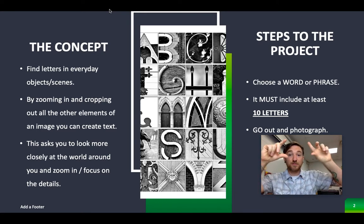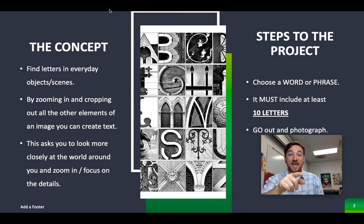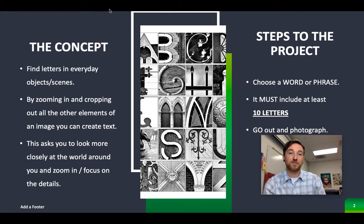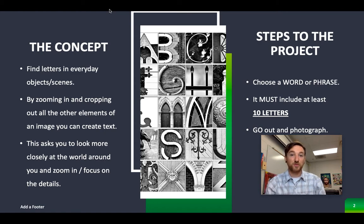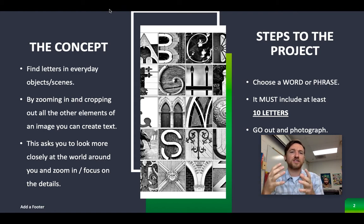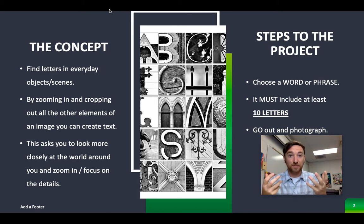It might involve turning something — you might take a picture that looks more like an M, but when you flip it on its side, it looks like a B. We're going to use editing software to be able to do that. You're going to zoom in and crop. This gets you to look more closely at the world, to focus on details, things that you normally don't see, and it's hopefully going to start training your eye to be a better graphic designer.